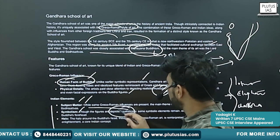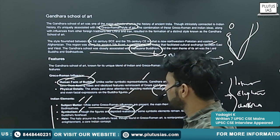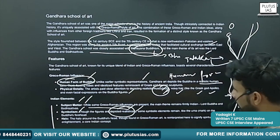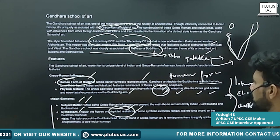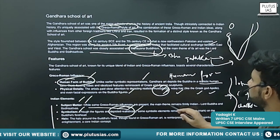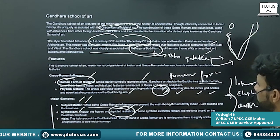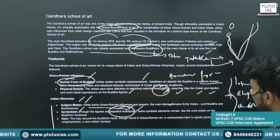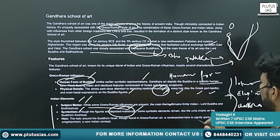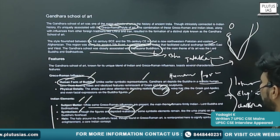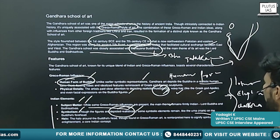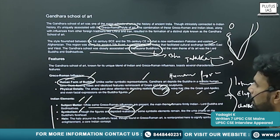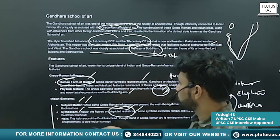The sculptures are depicted realistically. Though depicted realistically, there are some symbolic elements that remain, like the Urna — the mark on Buddha's forehead.